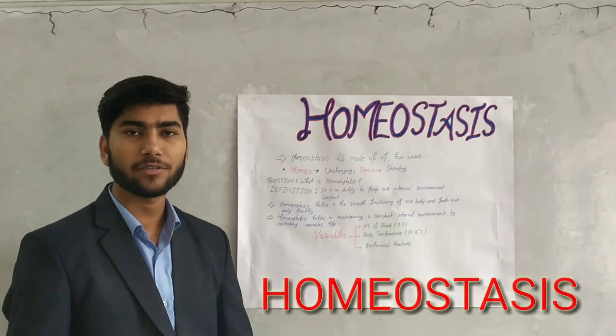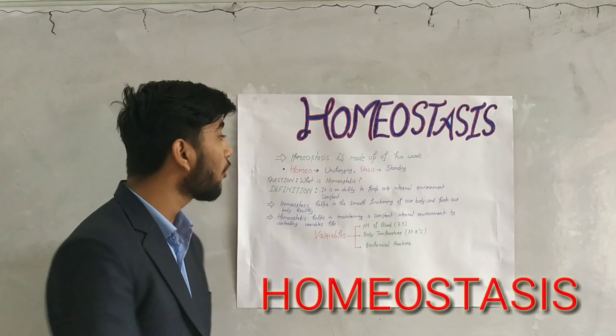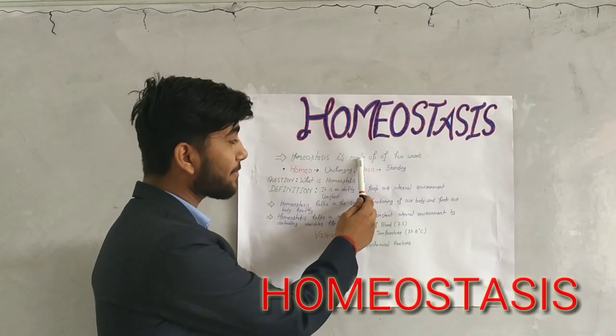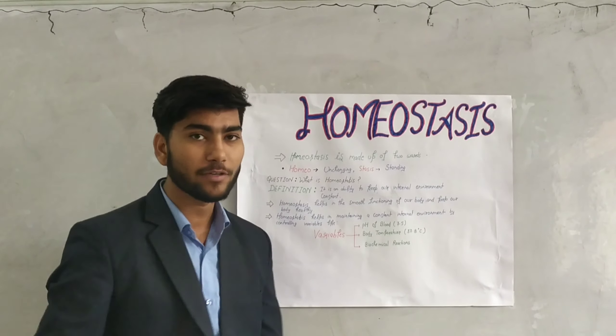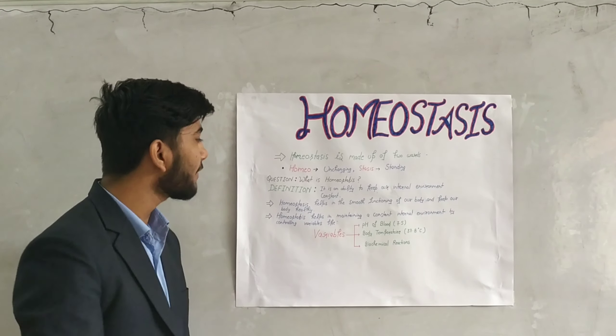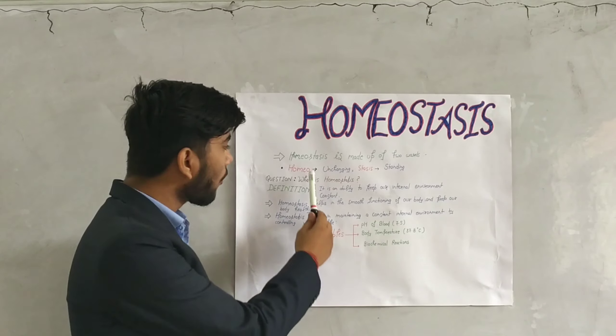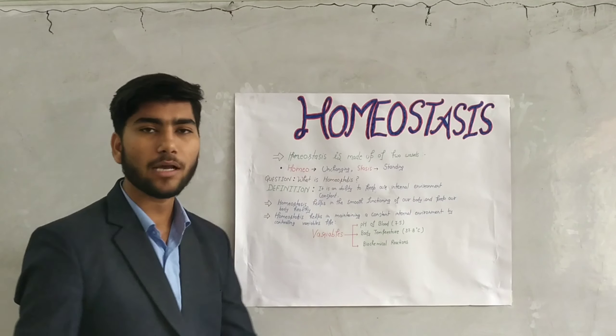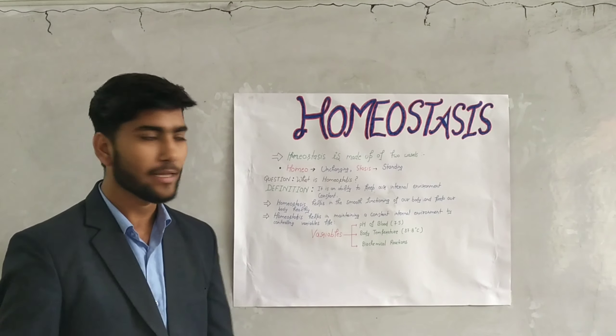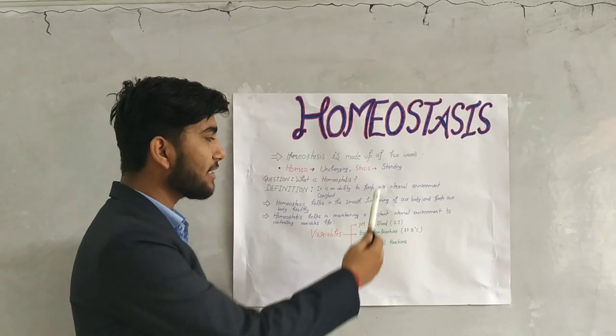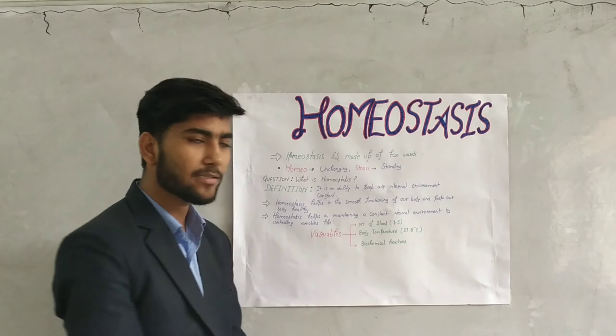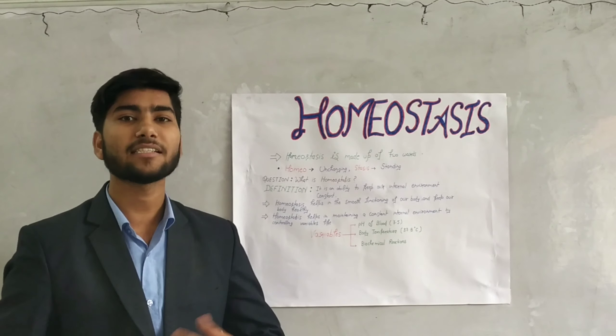Homeostasis is made up of two words. The first word is 'homeo,' which means unchanging, and the second one is 'stasis,' which means standing.